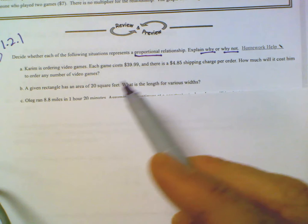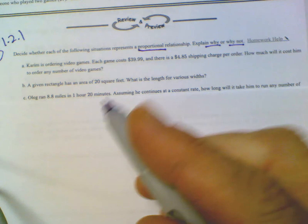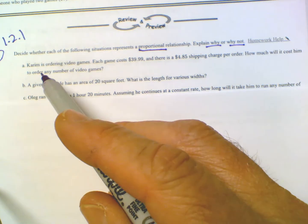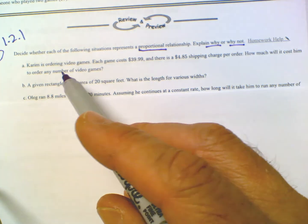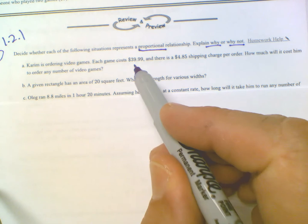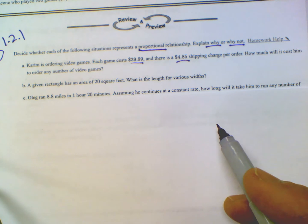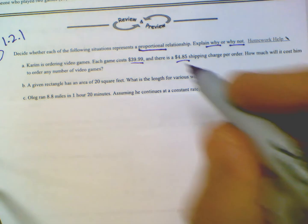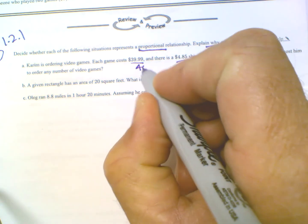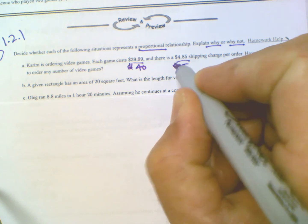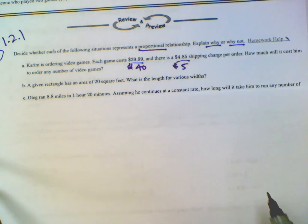Okay, so proportional, why or why not? So if I look at A and it gives me the scenario of Kareem is ordering video games, each costs $39.99 with a $4.85 shipping charge. Just for the sake of nicer numbers, because I want to look at this and see if there's an actual relationship, I'm going to round this to $40 and I'm going to round this to $5 so we don't get hung up by the cents.